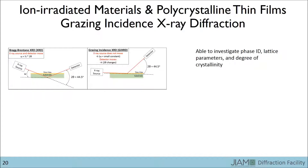If your sample is a thin film on a substrate or an ion-irradiated material, conventional Bragg-Brentano XRD may probe too deeply beneath the surface for you to study the region of your material that is interesting. As shown in the left panel, the X-rays interact with the substrate much more than a thin film, which is reflected in the diffraction pattern as a weak contribution from the thin film and a strong contribution from the substrate.